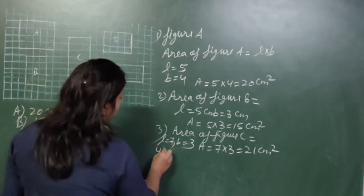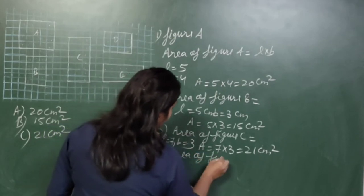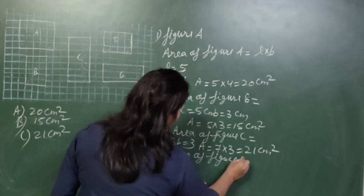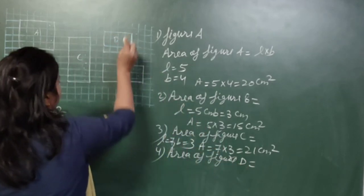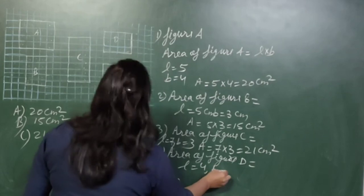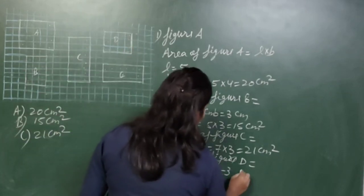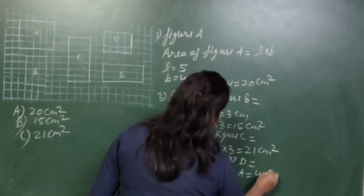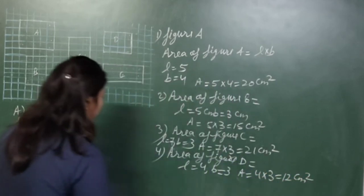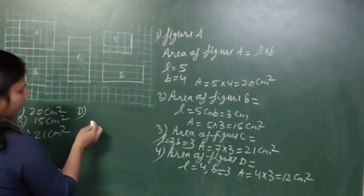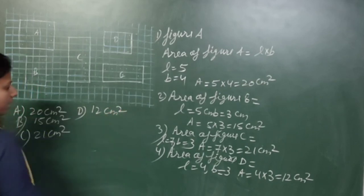Area of figure D: counting gives length as 4 and breadth as 3. So area equals 4 × 3 = 12 centimetres square. Figure D has an area of 12 centimetres square.